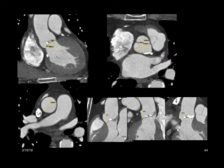In our annular measurements, we take cusp-to-commissure measurements and average the three. For sinus diameters, we measure from the level of the annulus attachment site up to the sinotubular junction, again averaging the three. As long as they're above the manufacturer's safety threshold, there's enough room to place the device. We also provide an angle measurement and the size of the ascending aorta, which matters for CoreValve placement since the CoreValve must seat into the ascending aorta superiorly.